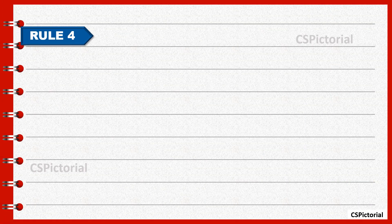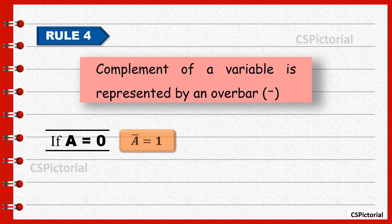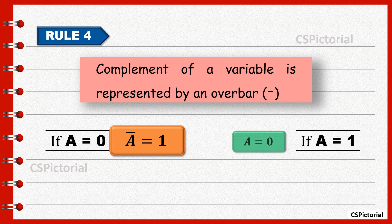The negation or complement of a variable is represented by an over bar. If A equals 0 then A-bar will be equal to 1. If A equals 1 then its complement A-bar will be equal to 0.